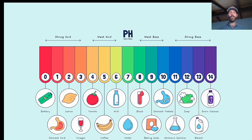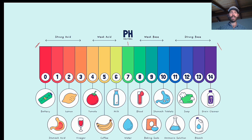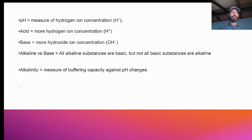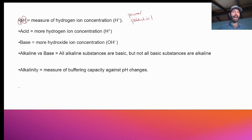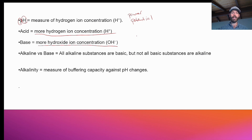Here we have the pH scale. It's a 0 to 14 scale — 0 being the strongest acid, 14 being the strongest base, and 7 being neutral right in the middle. pH is the measure of hydrogen ion concentration — it's been written as 'power of hydrogen' or 'potential of hydrogen.' An acid is going to have more hydrogen ion concentration, and a base is going to have more hydroxide ion concentration relative to hydrogen ion concentration.